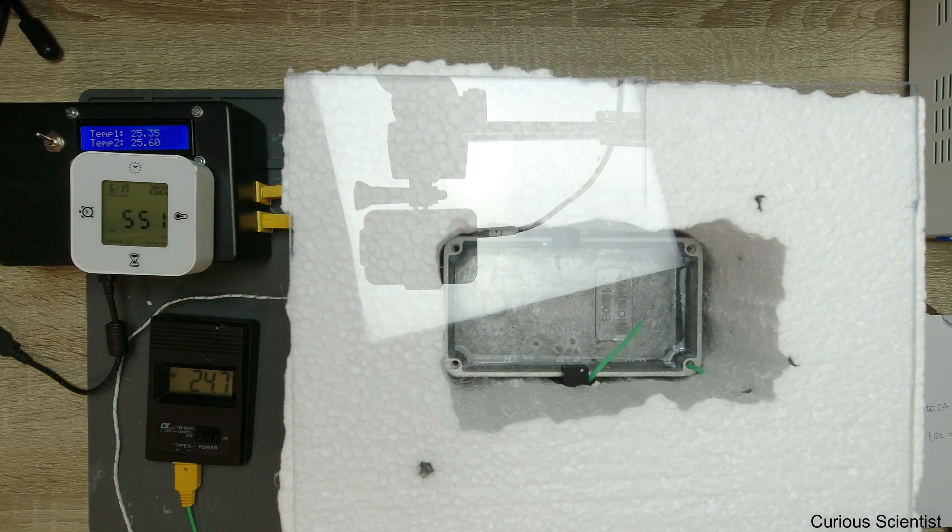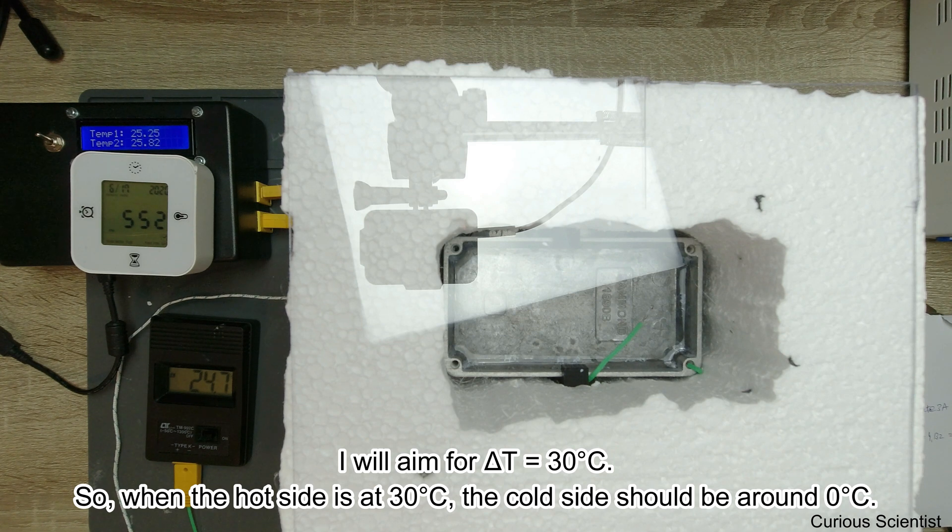So I did the same exercise here. We can see that we are roughly around 25 degrees. I overestimated this and said I would like to create 30 degrees delta T, so I want to go down to zero degrees Celsius.